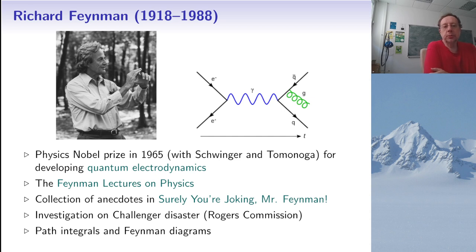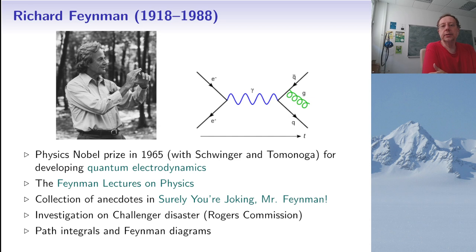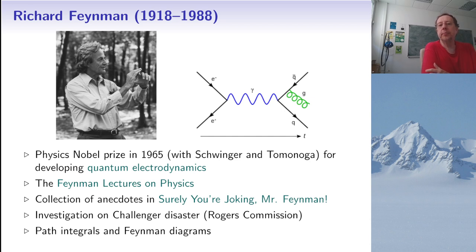Today we are interested in Feynman's contributions to quantum mechanics. Two related tools he introduced are path integrals and Feynman diagrams. Here is an example of a Feynman diagram from Wikipedia — you see time going from left to right, with an electron and positron colliding, transforming into a photon, which then splits into two quarks, one of which emits a gluon.